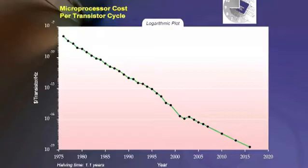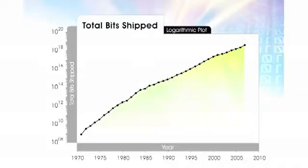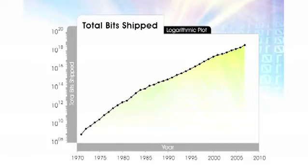That's a 50% deflation rate. It's also true of other examples like DNA data or brain data, but we more than make up for that. We actually ship more than twice as much of every form of information technology. We've had 18% growth in constant dollars in every form of information technology for the last half century, despite the fact that you can get twice as much of it each year. The amount of DNA data we've sequenced has doubled every year, and the cost has come down by half every year.